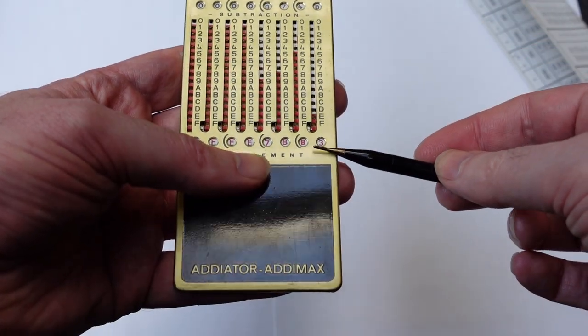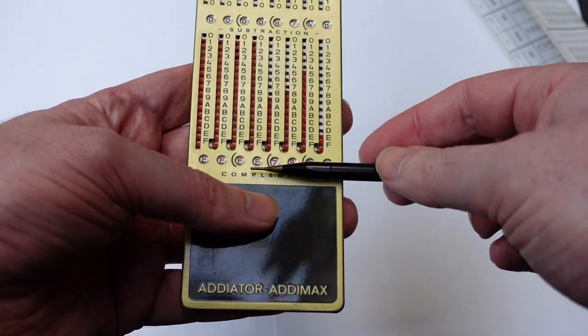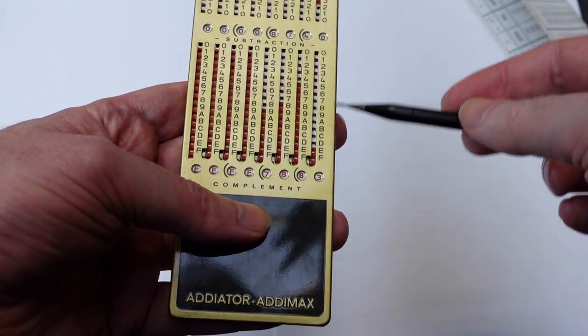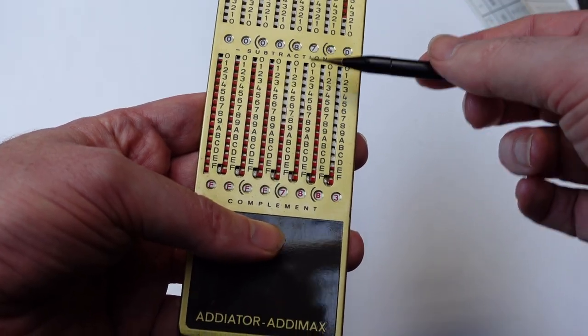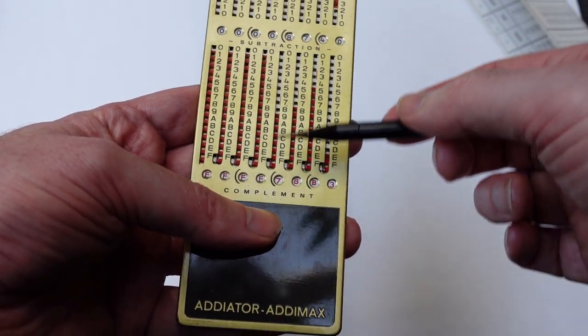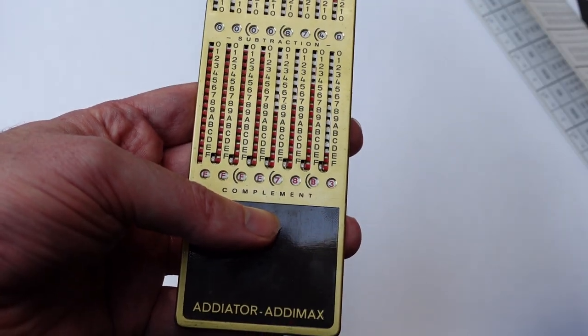And there's a second register down here, which shows the complement of this number. So these digits and these digits all add up to F, add up to 15.